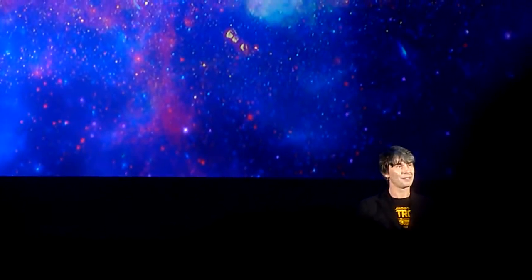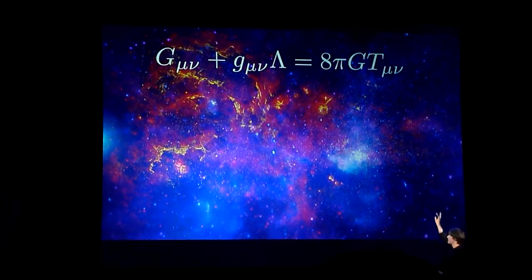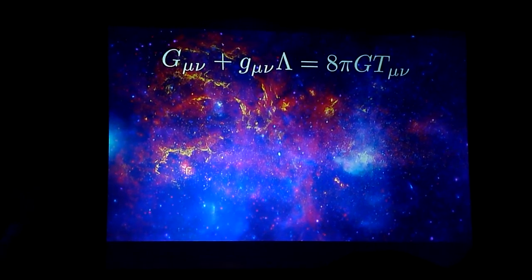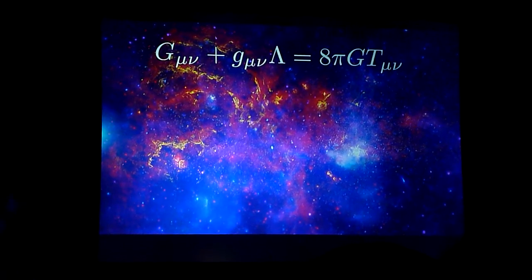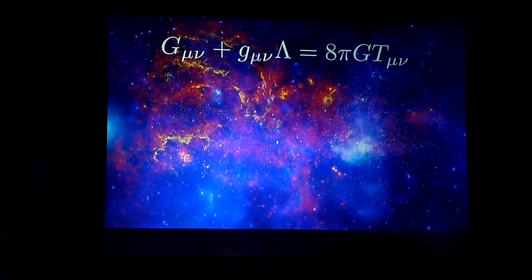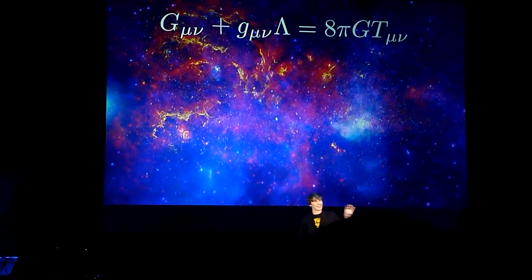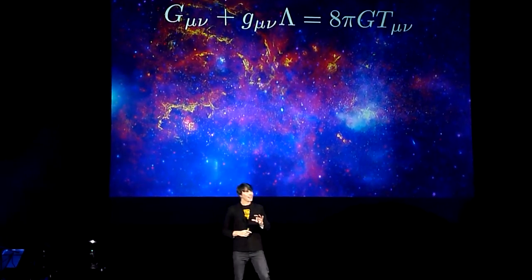Einstein's field equations of general relativity tells a story. Essentially, on the right-hand side of the equation, you plug in a distribution of matter — something like a spherical distribution of matter, you would get a star. And on the left-hand side, the output of this little machine is the shape of space and time around that mass. Einstein's theory essentially says that energy or mass curves space and time.